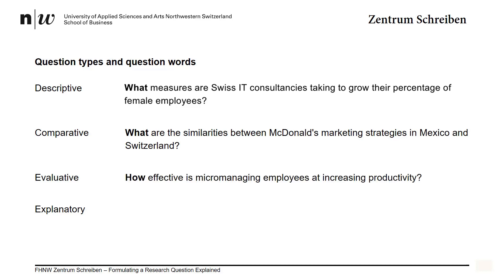Evaluative questions such as 'How effective is micromanaging employees at increasing productivity?' help you determine the value of a process or something — for example, how effective, efficient, or profitable. You'll need to be able to systematically measure effectiveness, efficiency, and profitability, so your method is going to be really important here.